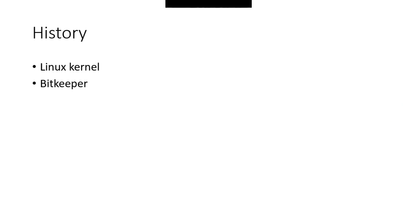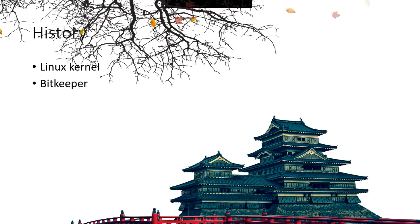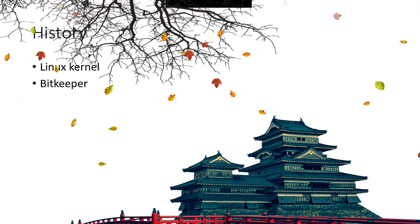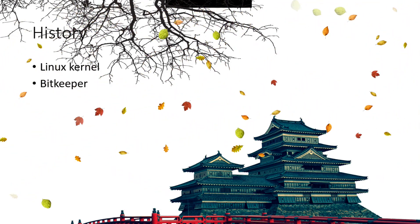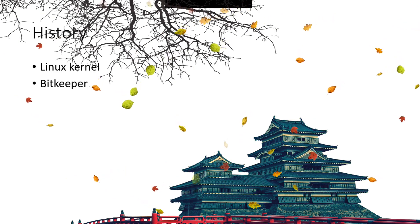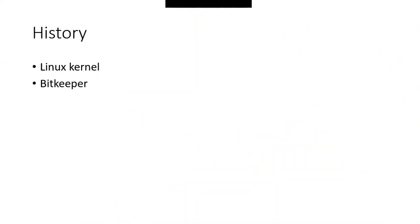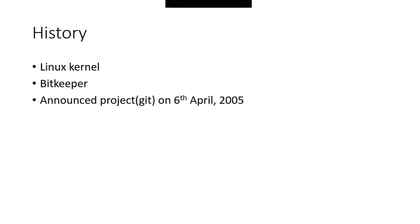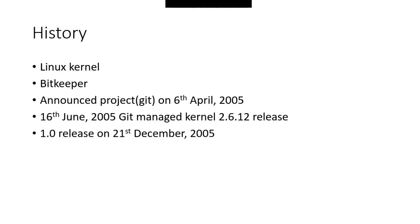They tried finding similar kinds of tools, but nothing worked out for them. Finally, they developed their own source control management tool called Git. Linus Torvalds announced the project Git on 6th April 2005, started working on it, and managed to use that tool to manage the Linux Kernel project. On 21st December 2005, they released the first version of Git.